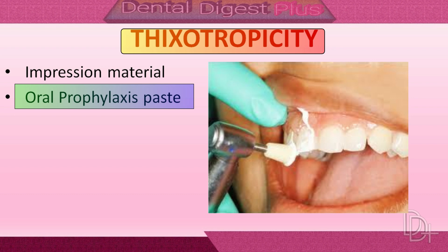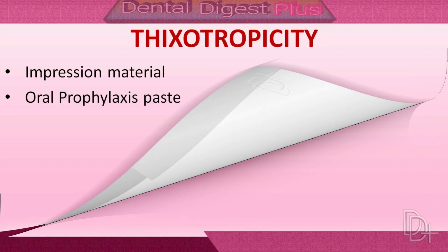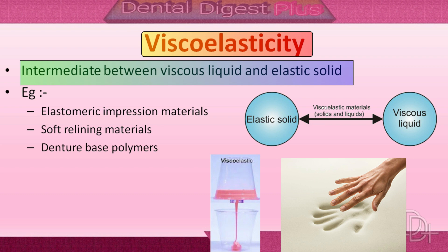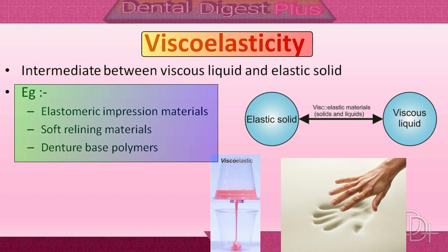Prophylaxis paste does not flow out of a rubber cup until it is rotated against the teeth to be cleaned. Viscoelasticity is the behavior of a material that is intermediate between a viscous liquid and an elastic solid. Examples include elastomeric impression materials and polymers such as soft relining materials and denture-base polymers, which all exhibit viscoelastic behavior.